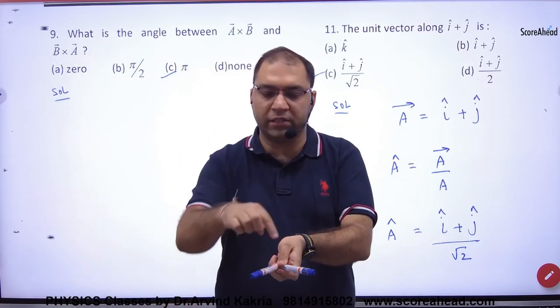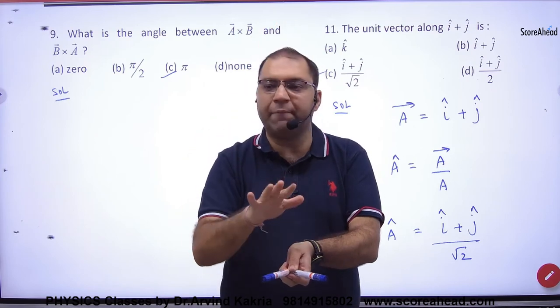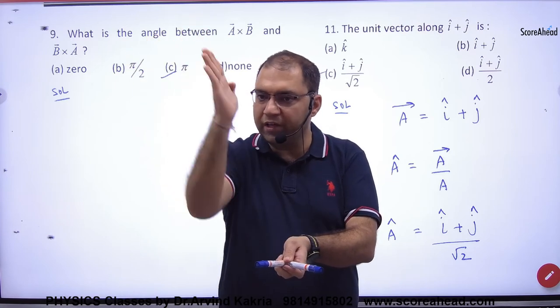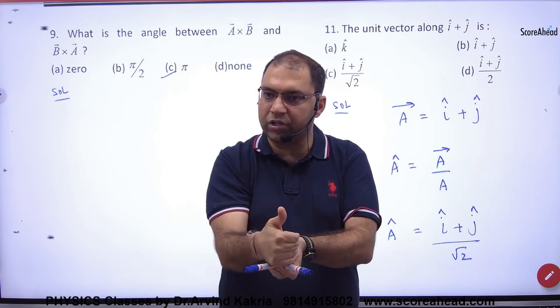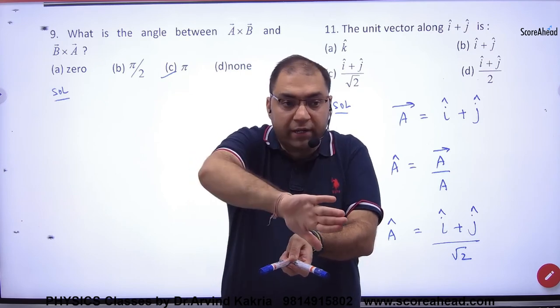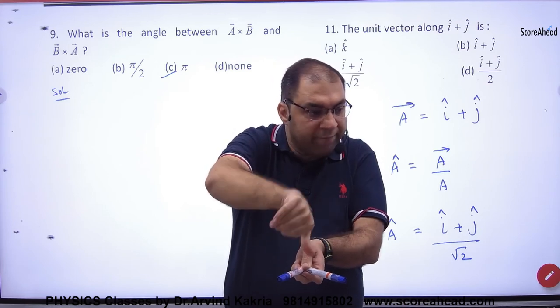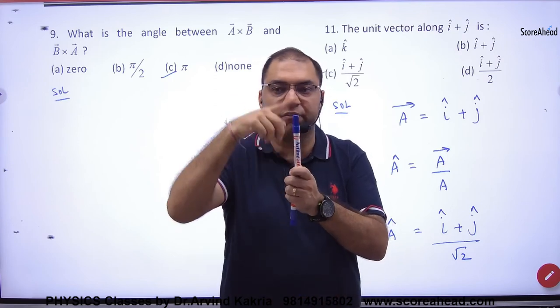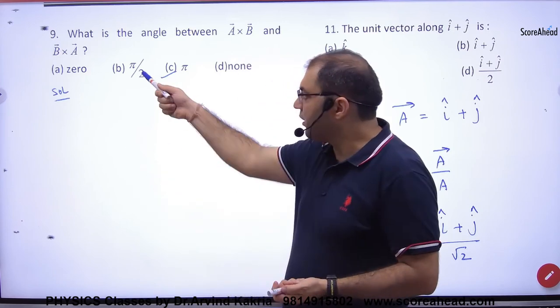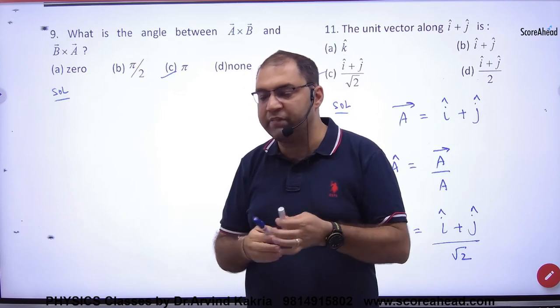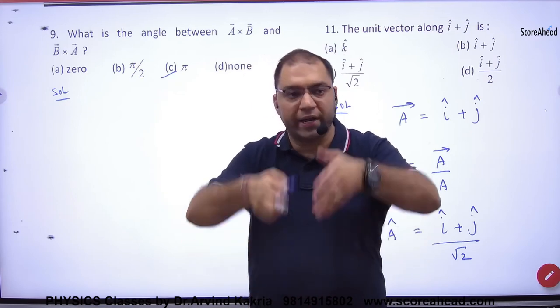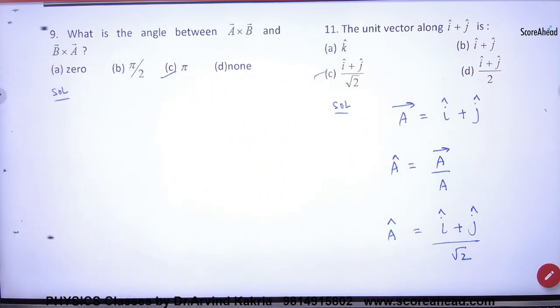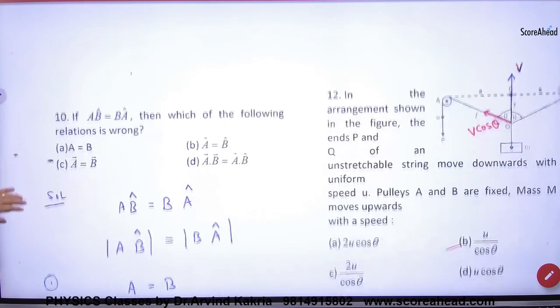How do we find the direction? The right hand rule: 4 fingers from A vector to B vector, so the direction is up. But if I say B vector cross A vector, the direction is down. So think: one direction up, one direction down. So how much angle? 180 degrees. Simple. So here if you change order, A vector cross B vector versus B vector cross A vector, the angle will be 180 degrees.